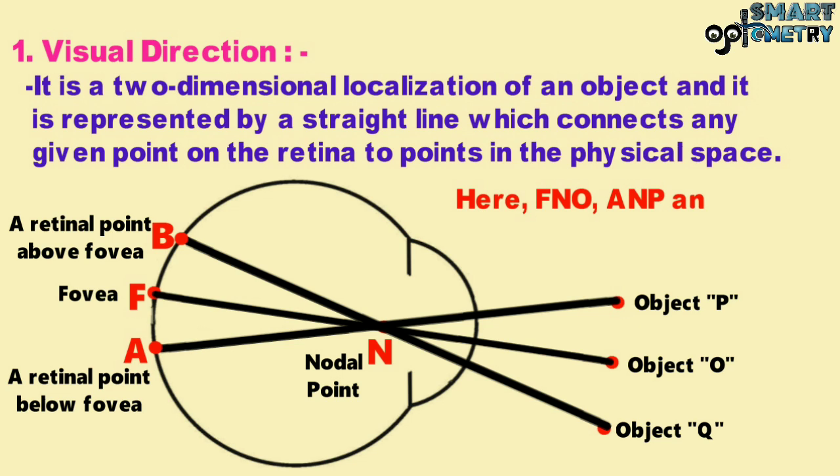Here, the lines of sight F-N-O, A-N-P, and B-N-Q are all visual directions.